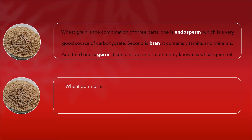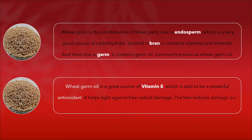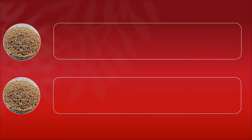Wheat germ oil is a great source of vitamin E, which is said to be a powerful antioxidant. It helps fight against free radical damage. The free radicals damage our cell membranes and brain cells in our body. Vitamin E travels throughout the body, neutralizes these free radicals, and makes our body cells and brain cells healthy. It also helps prevent oxidative stress.